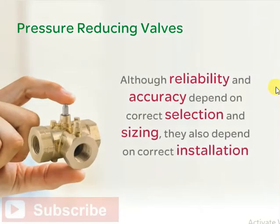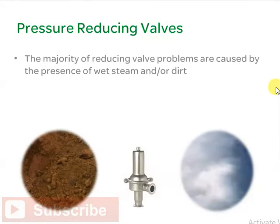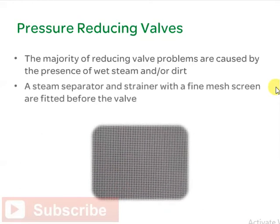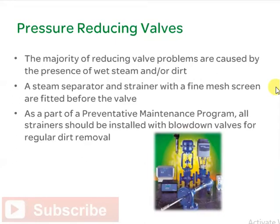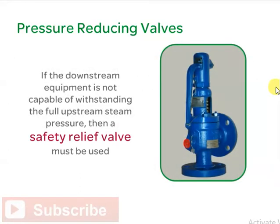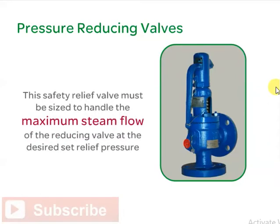Although reliability and accuracy depend on correct selection and sizing, they also depend on correct installation. Since the majority of reducing valve problems are caused by the presence of wet steam and/or dirt, a steam separator and strainer with a fine mesh screen is fitted before the valve as part of a preventative maintenance program. All strainers should be installed with blow-down valves for regular dirt removal. If the downstream equipment is not capable of withstanding the full upstream steam pressure, then a safety relief valve must be fitted either on the downstream piping or the specific piece of equipment to be protected from over-pressurization in case of valve failure. This safety relief valve must be sized to handle the maximum steam flow of the reducing valve at the desired set relief pressure.